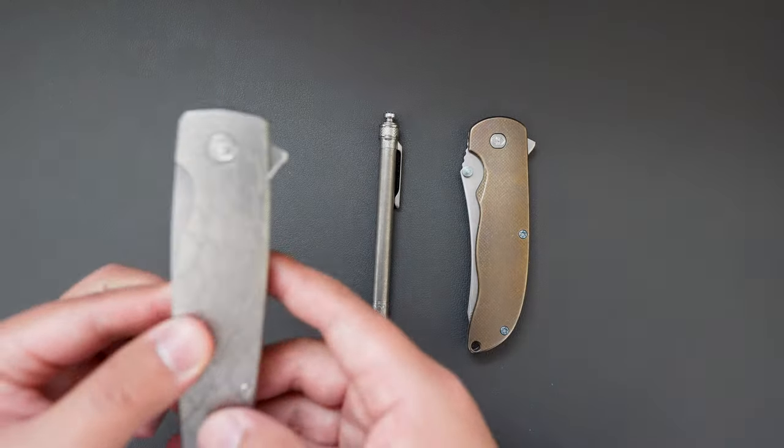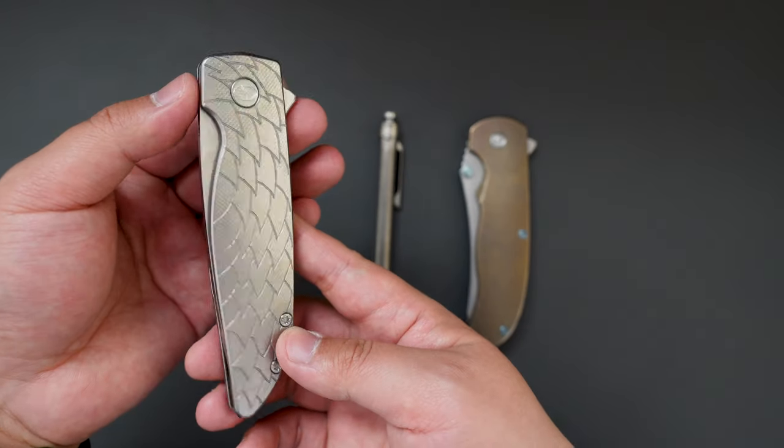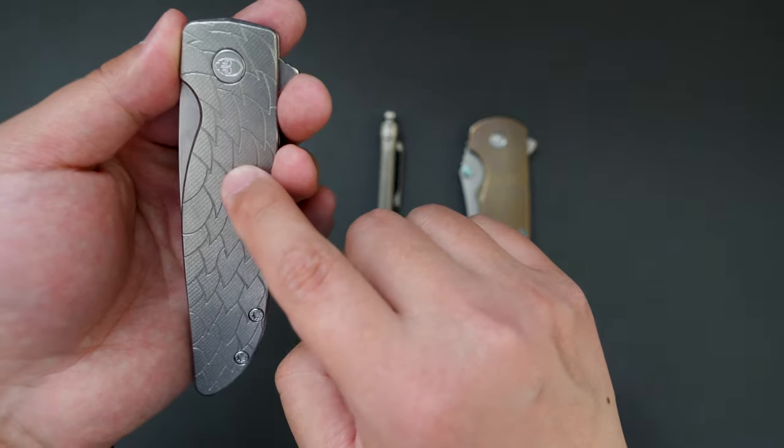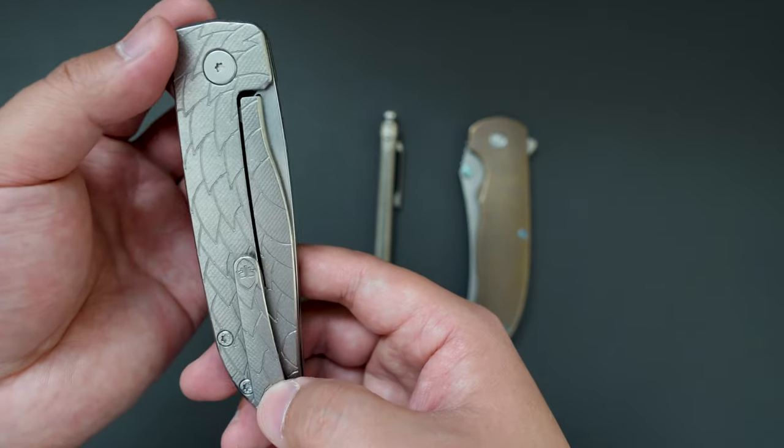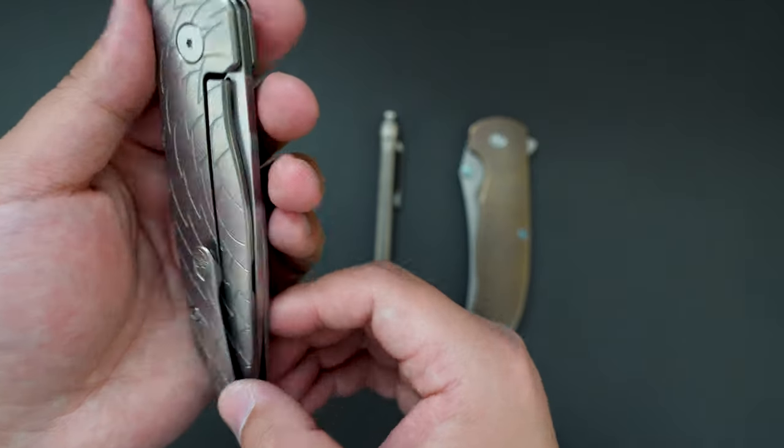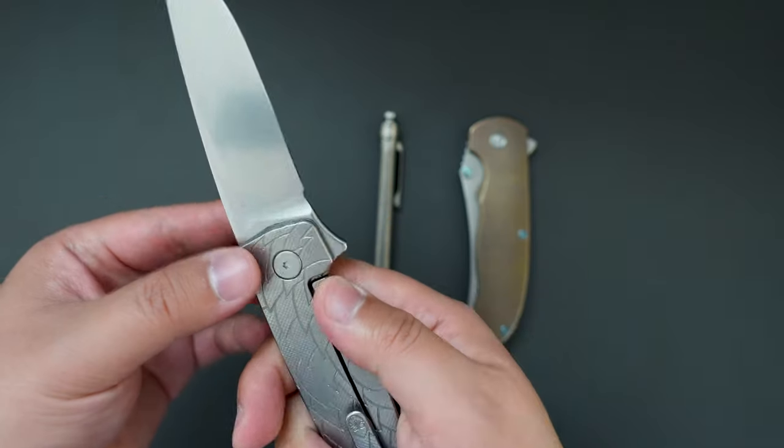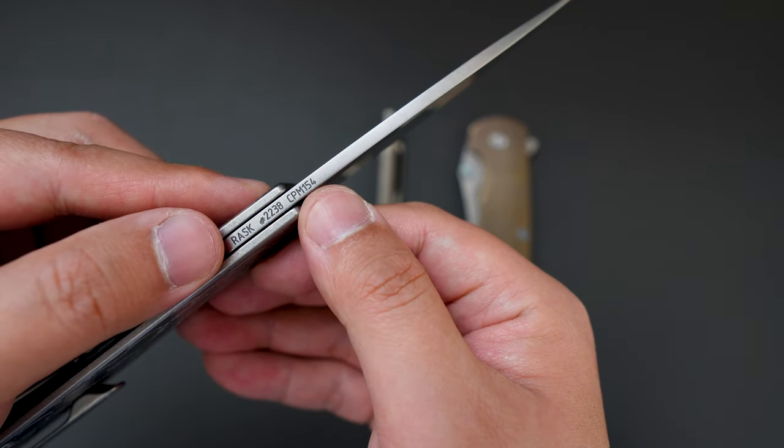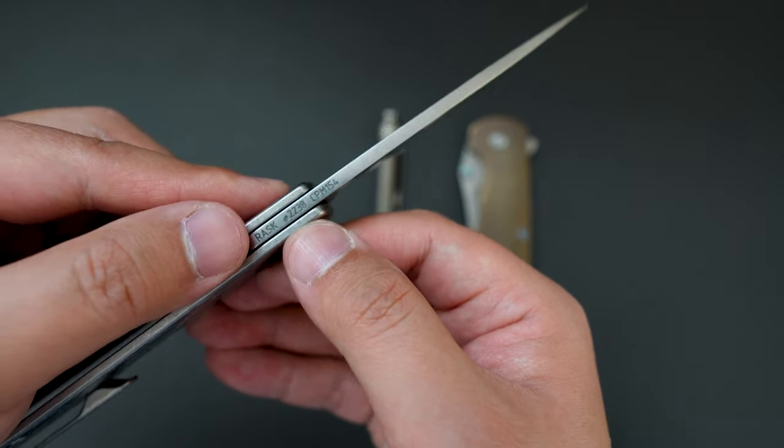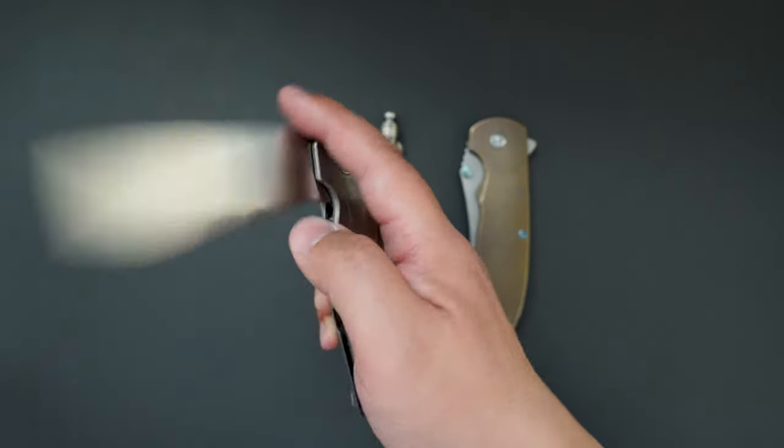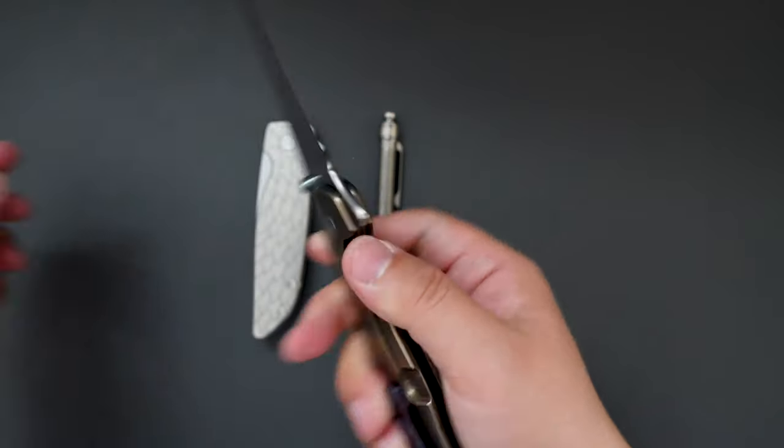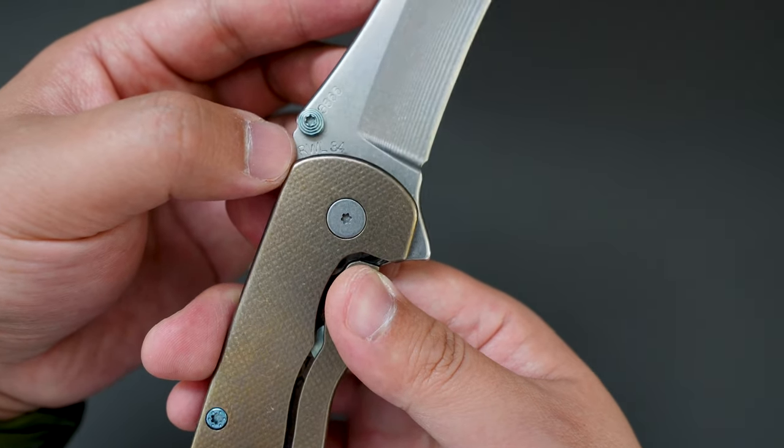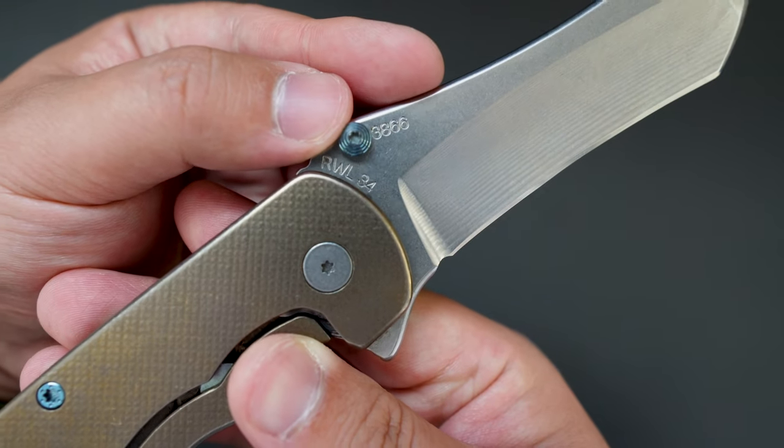And I also got my Grimsmo Rask. This one is in all silver hardware, silver titanium scales with dragon scale pattern on the clip as well. This one has stonewashed blade, as you can see this one has CPM 154 steel, serial number is 2238, and this one is RWL 34 which is their signature steel, and the serial number is 3866.